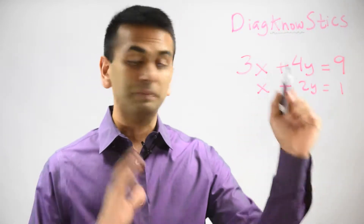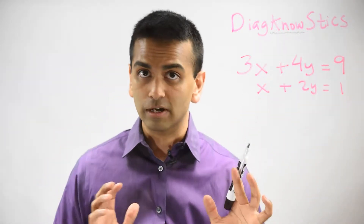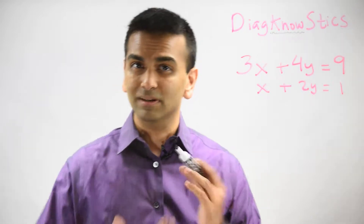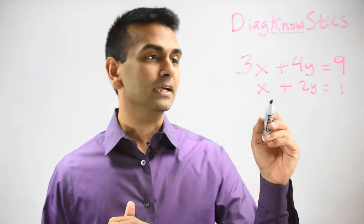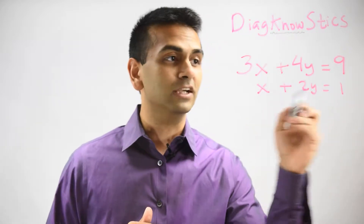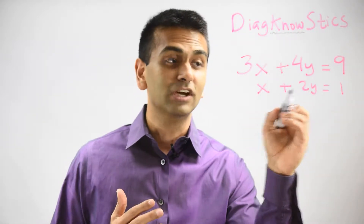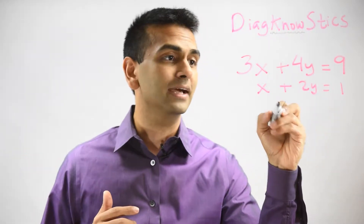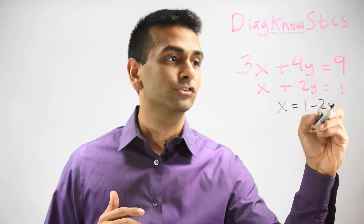What you're going to do is pick one of the two equations and solve for one of the variables. You won't actually get a number, but you'll get it in terms of the other. For example, let's solve for x in this second equation, just because it's easy — you just subtract 2y from both sides, so you get x equals 1 minus 2y.